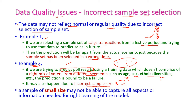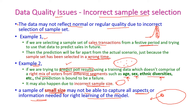If the sample size is very small, there will also be a problem. A small size sample will not be able to capture all aspects or all information which are needed for learning the model. If the population size is very high and the sample is a very small set, it cannot represent all the required information from the entire population. So, small sample size is also an important issue.